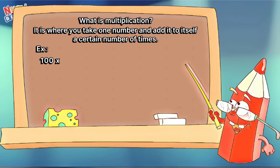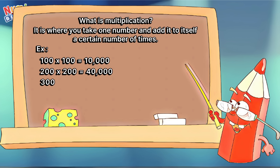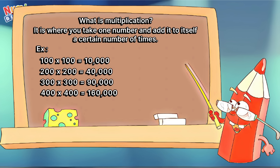100 times 100 is equals to 10,000. 200 times 200 is equals to 40,000. 300 times 300 is equals to 90,000. 400 times 400 is equals to 160,000. 500 times 500 is equals to 250,000.